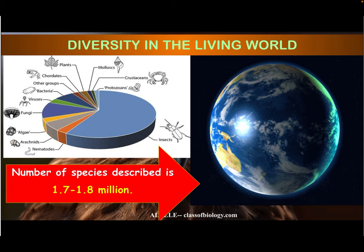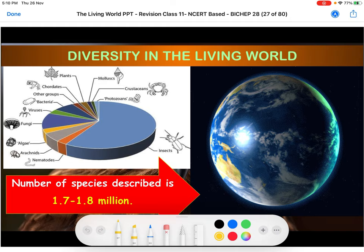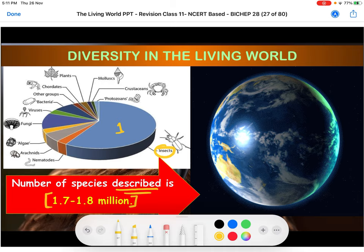As far as numbers are concerned, the average number of species described till now is 1.7 to 1.8 million total on the earth. Amongst them, the majority of the species identified are insects. Insects play a major role in diversity — the most number of species are insects, more than 50 percent. The rest are less than 50 percent.